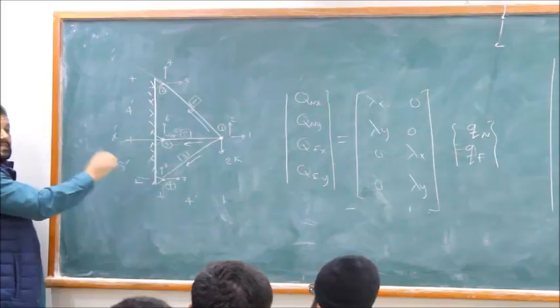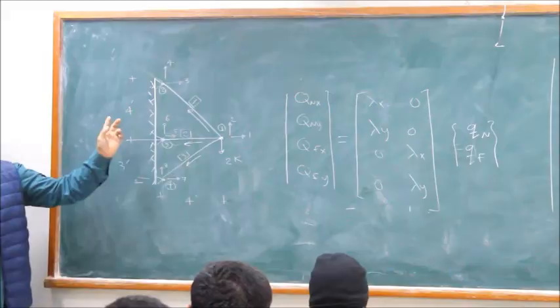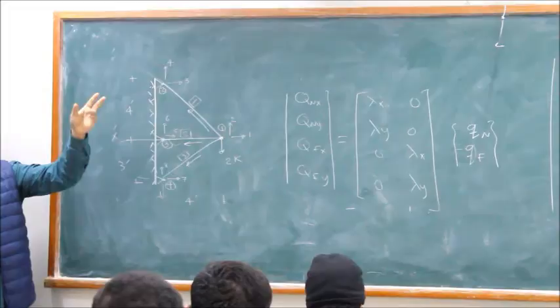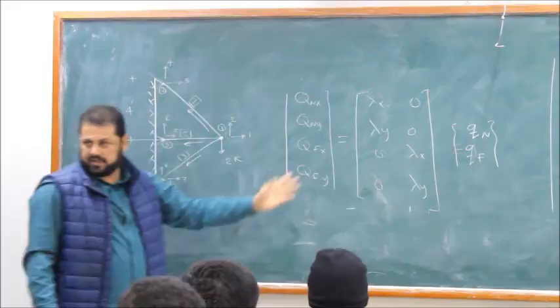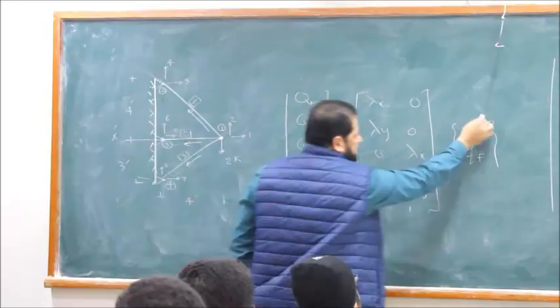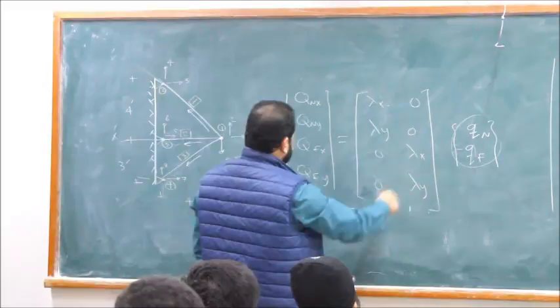This structure is statically determinate but kinematically indeterminate. Kinematic indeterminacy means how many unknown displacements we have. We have only D1 and D2 as unknown displacements, so this structure is kinematically indeterminate to the second degree. The only unknowns you need to find are D1 and D2.